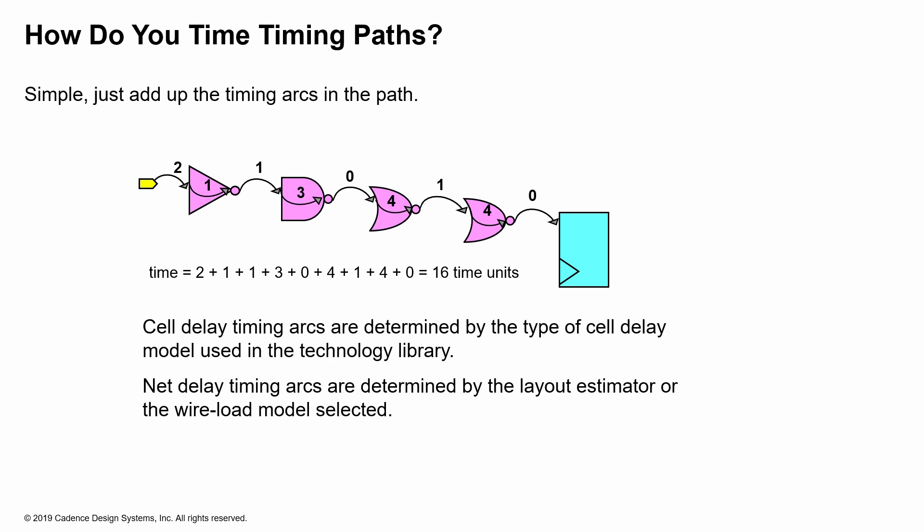STA tools consider the effect of unateness on timing arcs. The libraries have information for both rising and falling transitions, and the worst case of both is considered. Depending on the actual transition happening — whether rising or falling — that is what is used in the timing reports. For our discussions here, we'll ignore the effect of unateness.